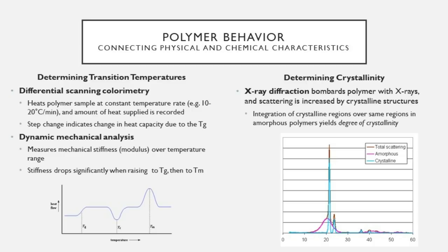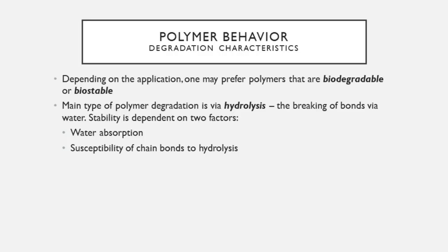The physical properties of a polymer may change over time, especially in the body, depending on whether it's biodegradable or biostable. Which one we want depends on the application. A load-bearing implant meant to last decades requires a biostable polymer. However, a tissue scaffold meant to be replaced by the body's healthy cells during wound repair should be biodegradable — preferably on the same timescale as the wound healing process.